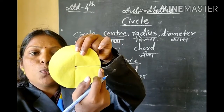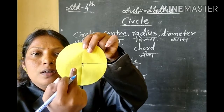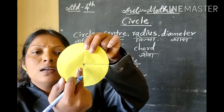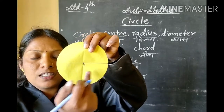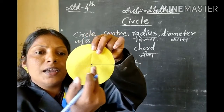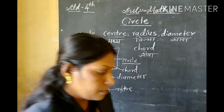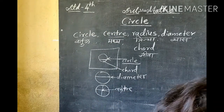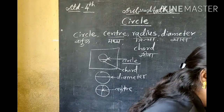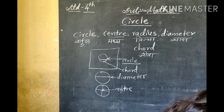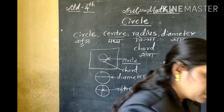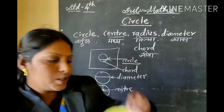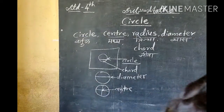Point M to point P — we get the line MP. This line from the center point M to a point P on the circle is called the radius. Line MP is called the radius.